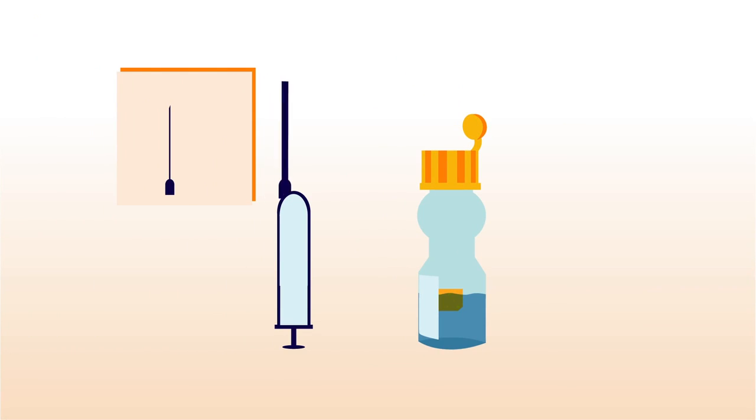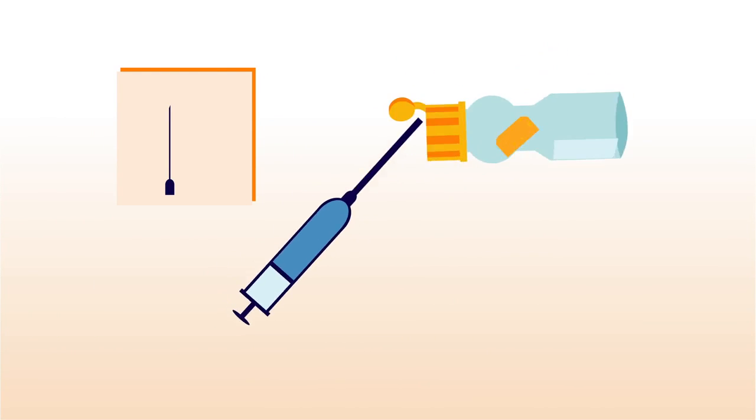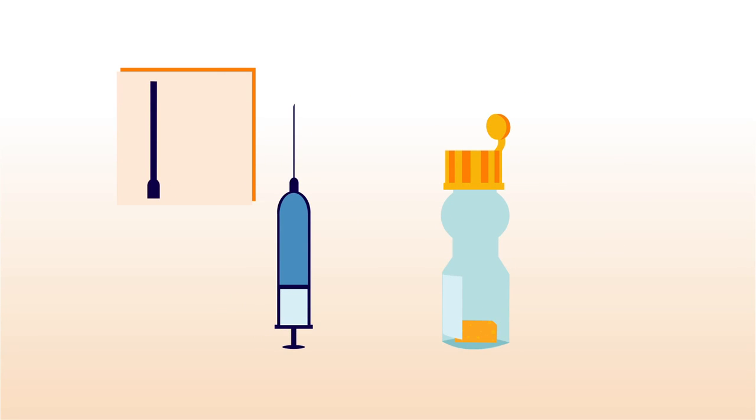Put the thick drawing up needle onto the syringe and draw the liquid up. Replace the needle with an injection needle and you're good to go.